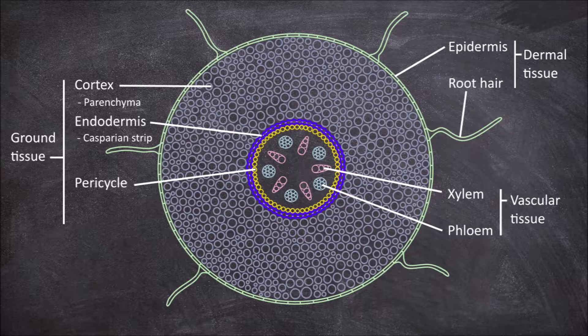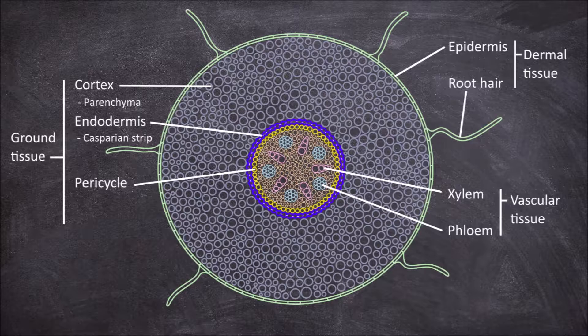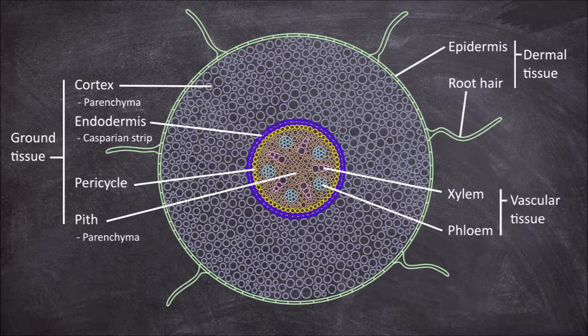In from the vascular tissue in the centre of the monocot root you will find the pith. This is absent in dicot roots. The pith consists of parenchyma cells that function in storage in the root.